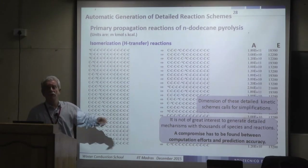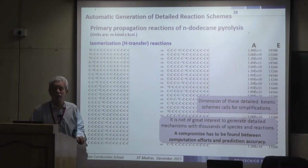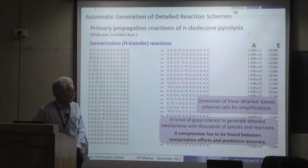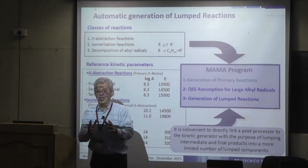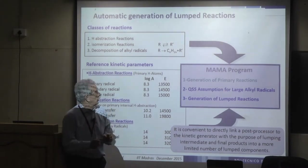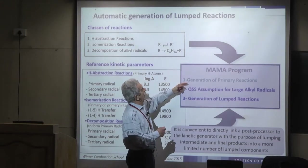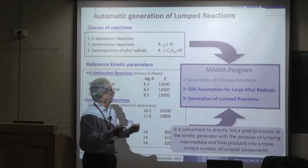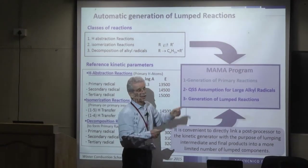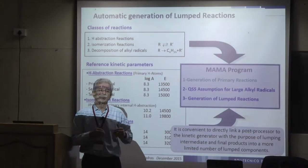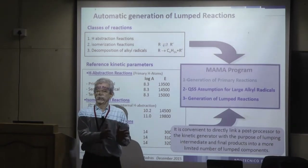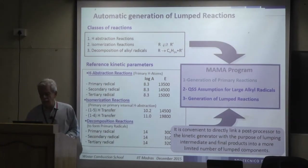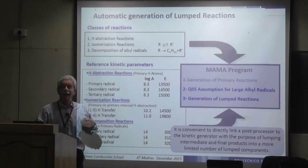The MAMA program generates a full detailed scheme and then applies quasi-steady-state assumption for large alkyl radicals. Since large alkyl radicals exist for only 10⁻⁷ to 10⁻⁸ seconds, it is convenient to directly lump their reactions. These large radicals — sometimes called mu-radicals, meaning radicals undergoing only unimolecular reactions (isomerization or decomposition) — form a linear system of equations that can be solved to find their concentration.